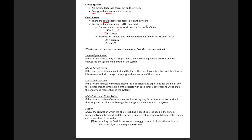That work can be positive or negative depending on the direction the force is acting. If the force acts in the direction of motion, it does positive work — kinetic energy increases. But if the force acts opposite to the motion, it does negative work. So in a closed system there are no outside forces and energy and momentum are conserved, meaning mechanical energy will not change. In an open system, the energy changes by the amount of work done and momentum changes due to the outside force.